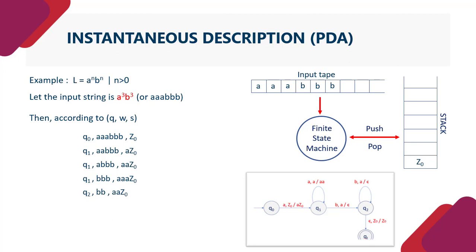Now at Q2, one B is consumed and one A from stack is popped. Again at Q2, B is coming so the A in stack is popped. At Q2 now what do we get?